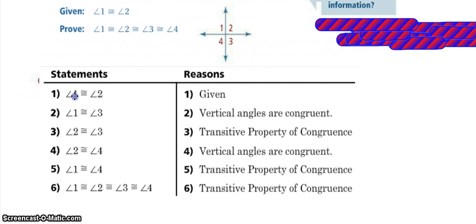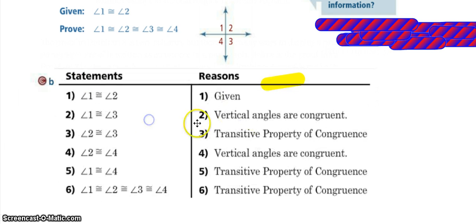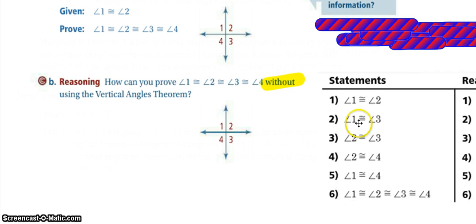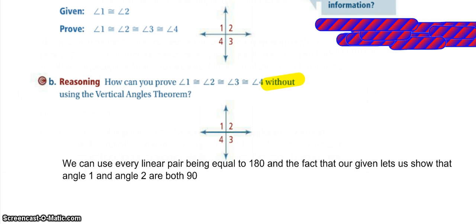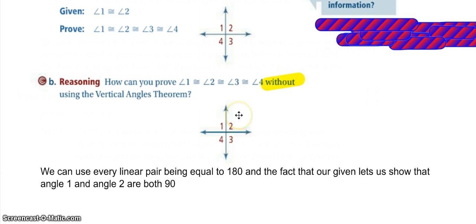This gets more difficult when we're asked to do this without using the vertical angles theorem — we cannot use any of those vertical angles reasons. I'm not going to write out the whole two-column proof because I may ask you a problem like this on one of our assessments. We can start with angle one being congruent to angle two as our given, then use the fact that linear pairs are equal to 180. That lets us prove that since they're equal to each other and the sum is equal to 180, then they are both equal to 90. From there, set up a linear pair with angles two and three — since angle two is 90, we infer angle three is also 90 — then do the same thing for the linear pair of three and four, and prove that all of them are congruent.